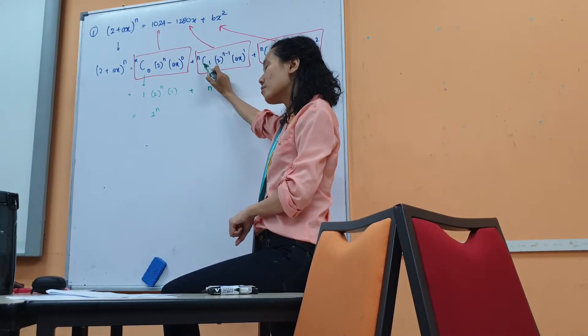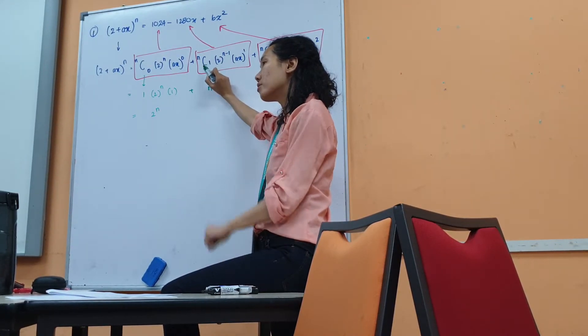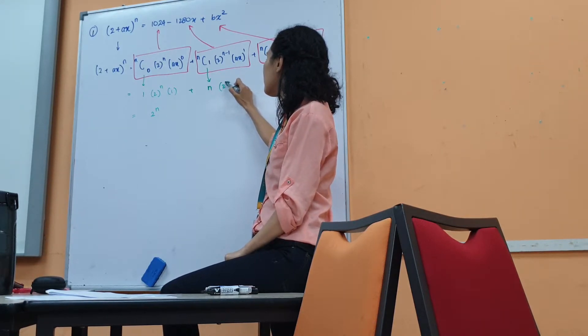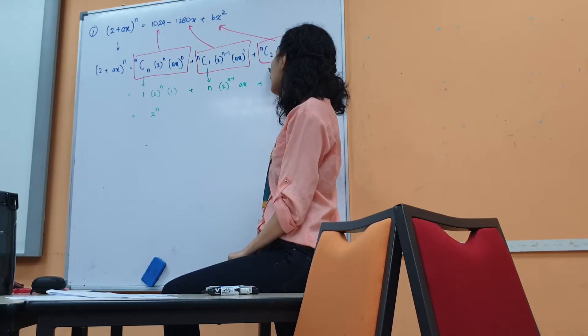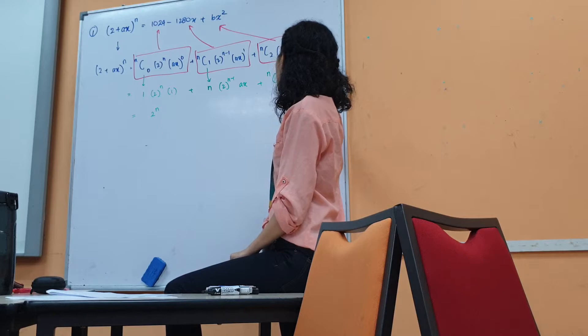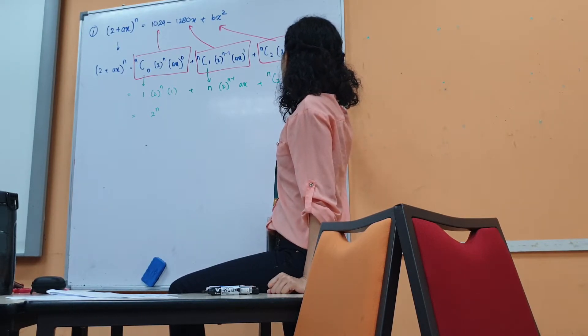5C1, you get 5. 3C1, you get 3. 100C1, you get 100. NC2 is a bit difficult, so we just leave it there.